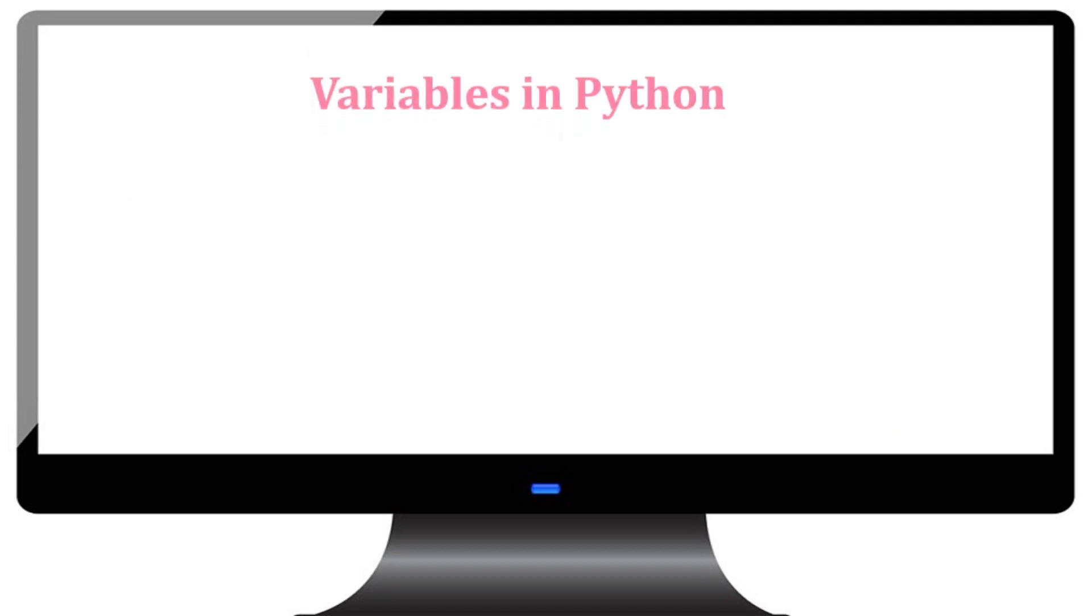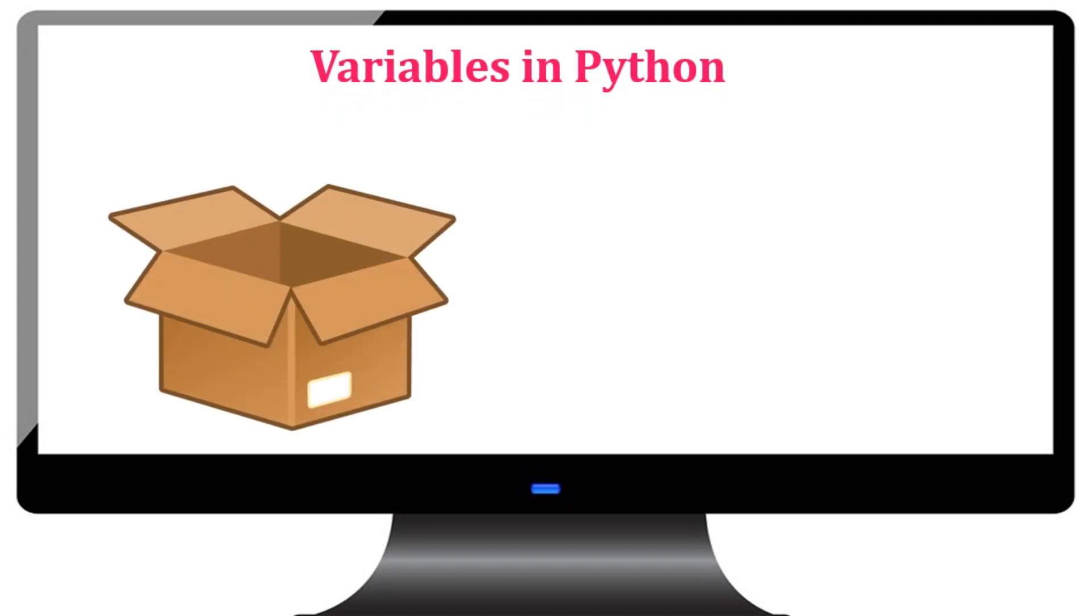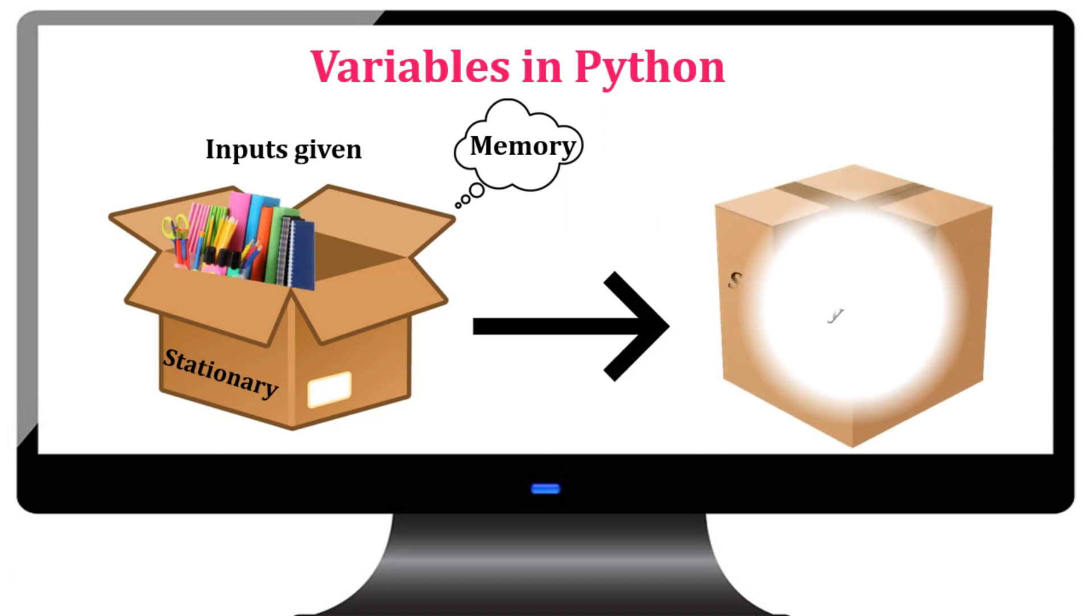Let us consider an example. Let us declare a variable named as stationary. A space will be created in the memory for the variable. The inputs of stationary given will be stored in the container called stationary and stored in the computer memory.